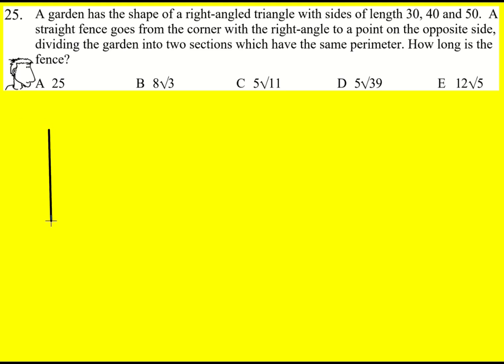A garden has the shape of a right-angled triangle with sides of length 30, 40 and 50. So here's a representation of that. I'm going to say that this one is 30, this one's 40, and then this whole thing is 50.